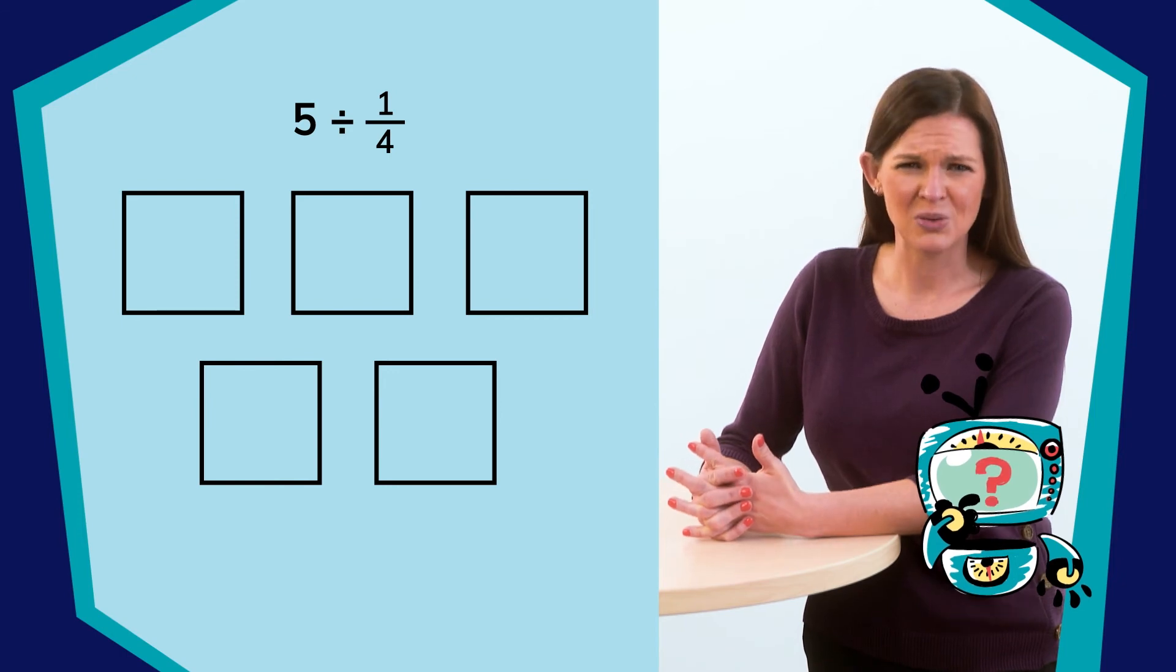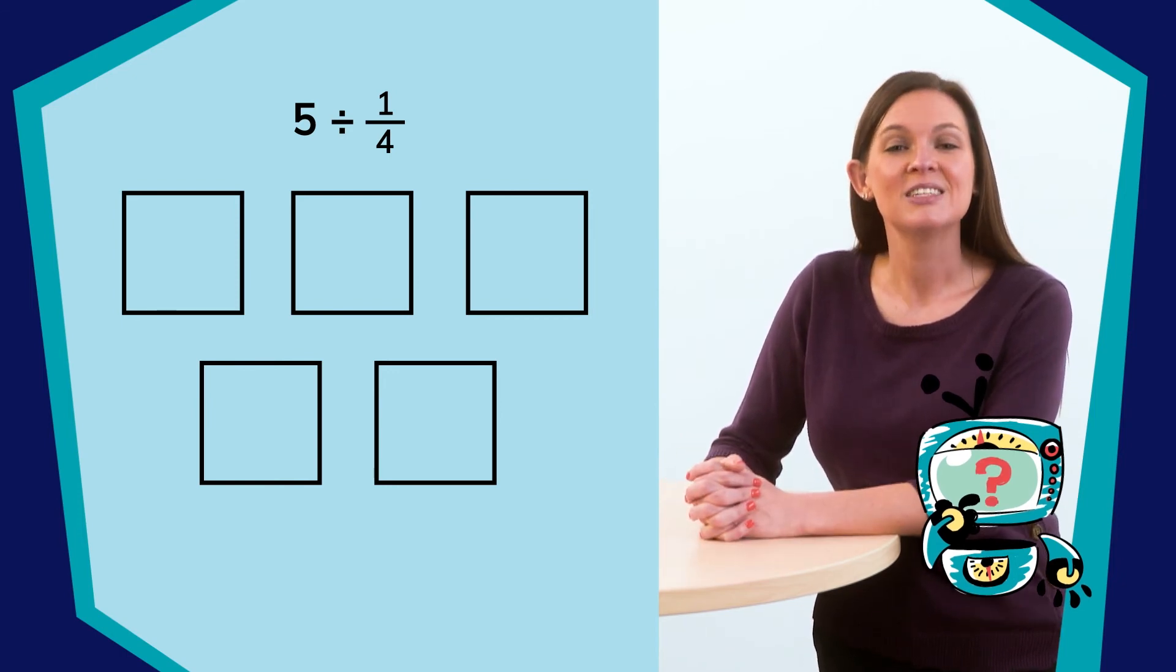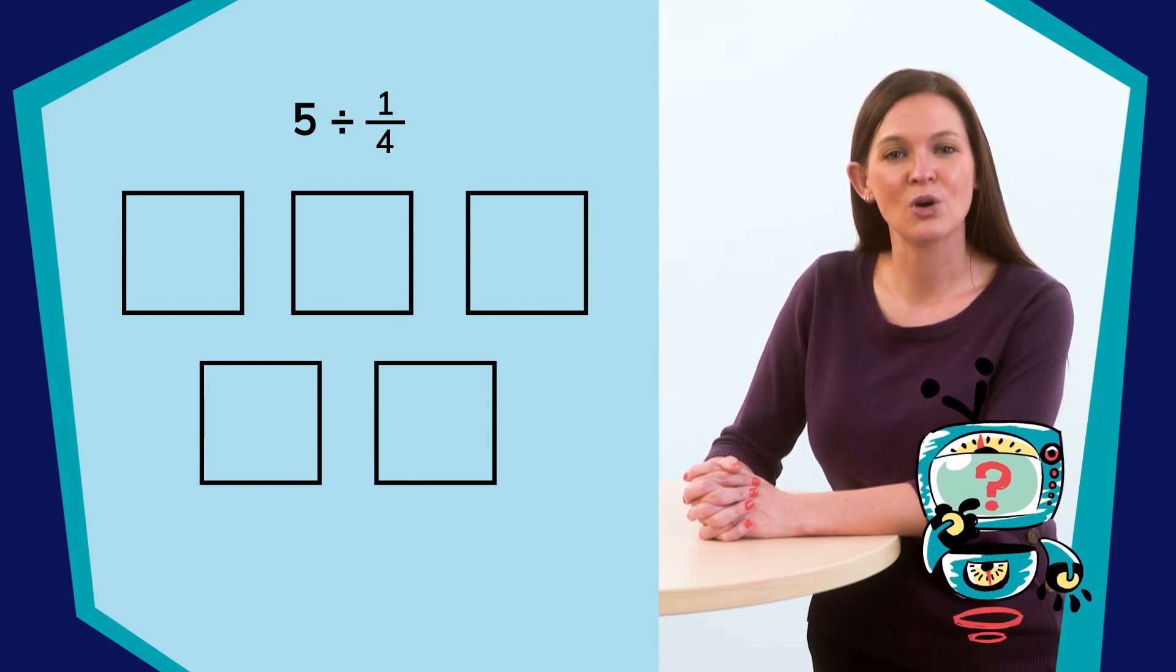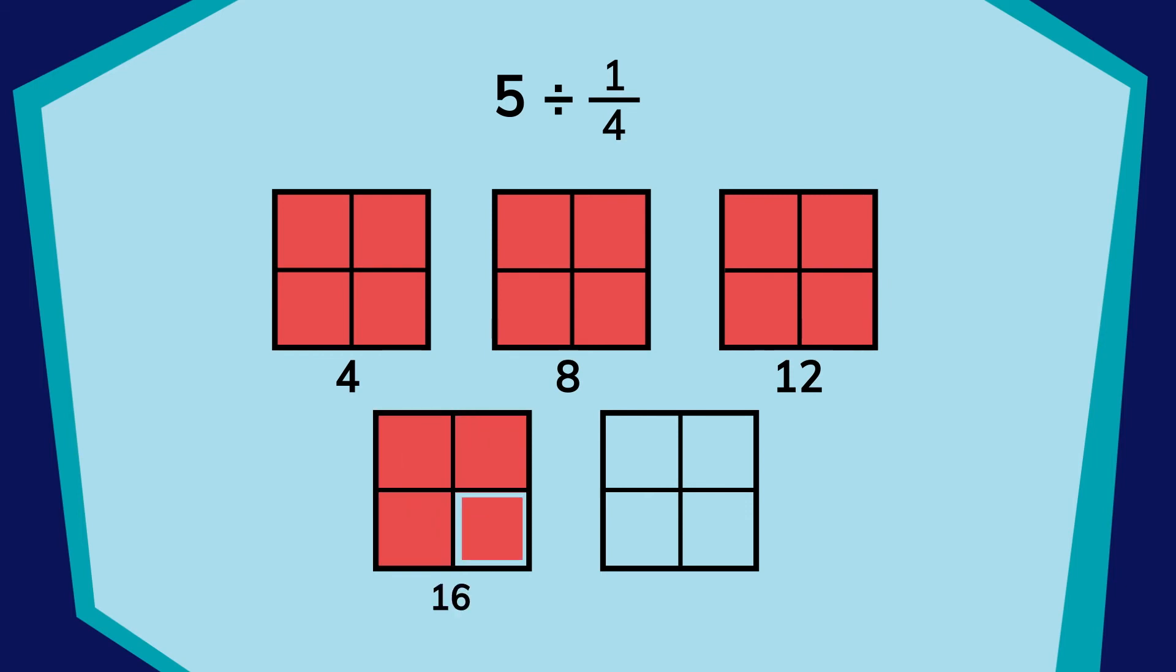Great. Divide each bunch into one-fourth and count the total groups. 1, 2, 3, 4, 5, 6, 7, 8, 9, 10, 11, 12, 13, 14, 15, 16, 17, 18, 19, 20. Mr. James can serve snack to 20 students with his five bunches of grapes.